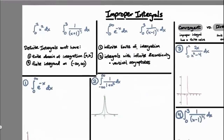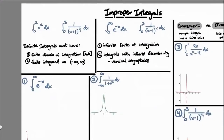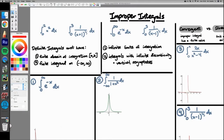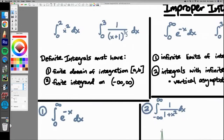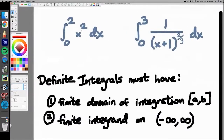This whole lesson is going to be all about improper integrals. To explain what they are, I'm going to use the idea behind definite integrals, which are covered in Calc 1. Definite integrals must have a finite domain of integration, meaning they go from A to B — for example, from 0 to 2 or 0 to 3.